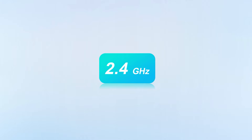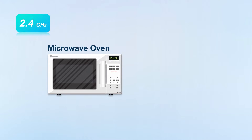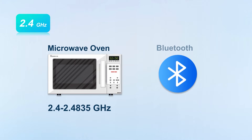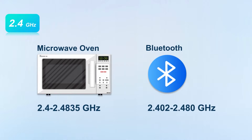Among these three frequency bands, 2.4 GHz appeared the earliest and is also the ISM radio band commonly used in various countries. For example, the microwave oven in our home is a common ISM device, and the commonly used Bluetooth also works on the 2.4 GHz frequency band, so it is easily interfered by these devices.